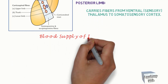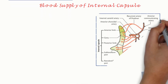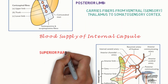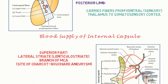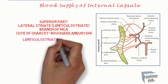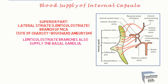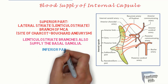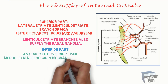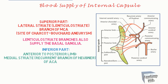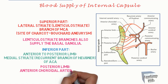Blood supply of the internal capsule. The superior part is supplied by the lateral striate — lenticulostriate — branch of the middle cerebral artery, which is the site of Charcot-Bouchard aneurysm. Lenticulostriate branches also supply the basal ganglia. The inferior part, anterior to posterior limb, is supplied by the medial striate — recurrent branch of Heubner — of the anterior cerebral artery. The posterior limb is supplied by the anterior choroidal artery from the internal carotid artery.